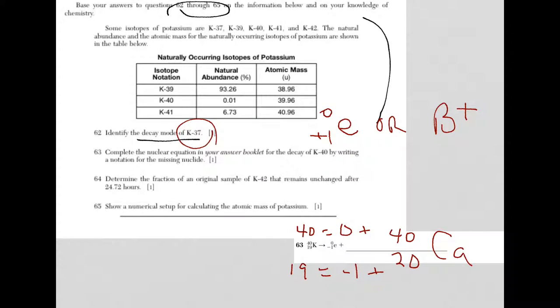Let's go to 64. It says determine the fraction of the original sample of potassium-42 that remains unchanged after 24.72 hours. Well, this is a decay type question. What I like to do is I like to set up a chart. That would be mass and then time.